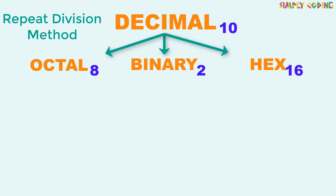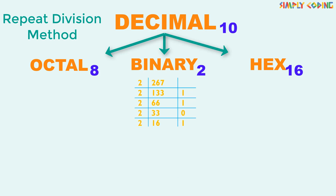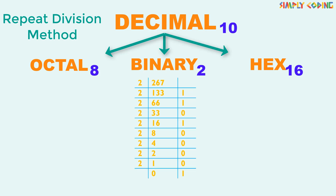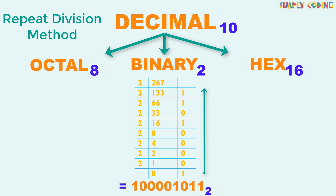To convert from decimal to binary, let's take the number 267. We know that when we divide any number by 2, we get a remainder of 0 or 1. So we divide 267 by 2 and note down the quotient and the remainder, and continue dividing the quotient by 2 until the quotient becomes 0 or 1. The sequence of remainders starting from bottom up is the binary equivalent of 267, which is 100000011.